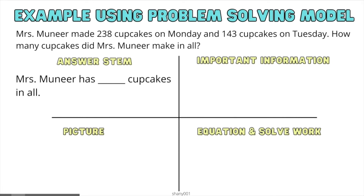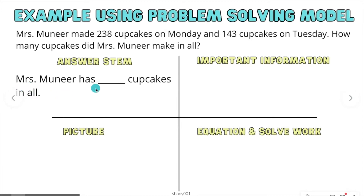So my answer stem is over here. I basically rewrite the question in answer form. The question is: how many cupcakes did Mrs. Muneer make in all? I rewrote it like this: Mrs. Muneer has blank cupcakes in all. I do not know how much, but these steps will help me figure that out.